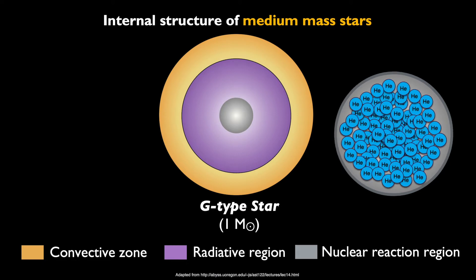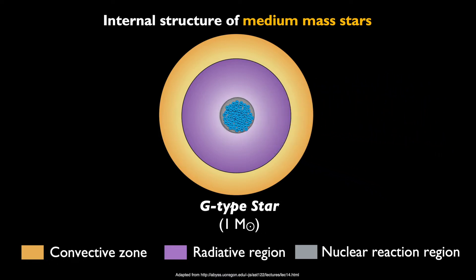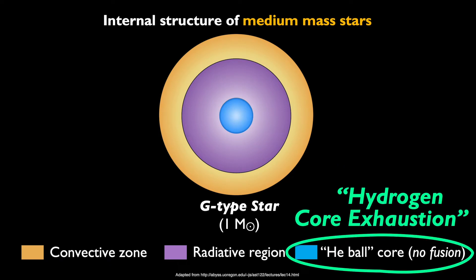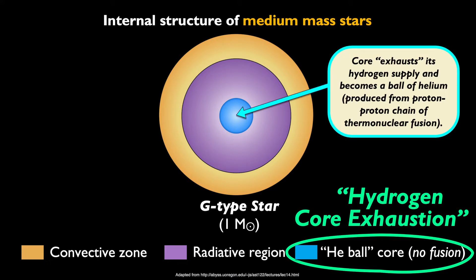With that, the core has used up all of the available hydrogen that it had and has fused it all into helium, resulting in the helium ball core. At this point, the star has experienced hydrogen core exhaustion, where it has, for lack of a better word, exhausted its hydrogen fuel supply. With hydrogen core exhaustion, the core has used up all of the hydrogen fuel that it had for proton-proton fusion. The newly formed helium replaces the hydrogen as the hydrogen runs out, and the core becomes a ball of pure helium.